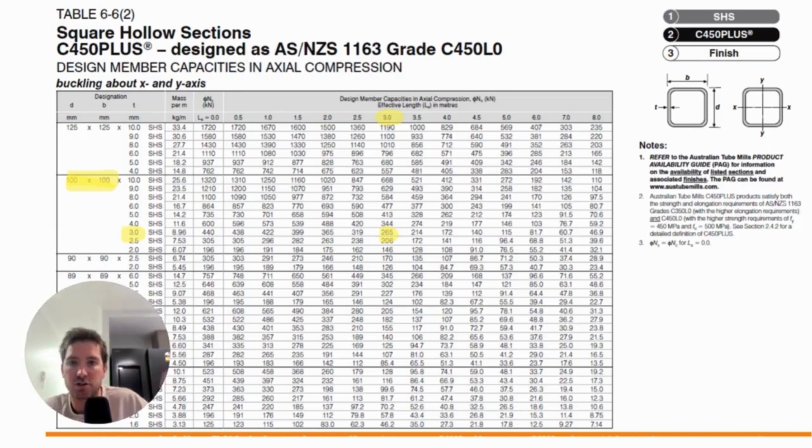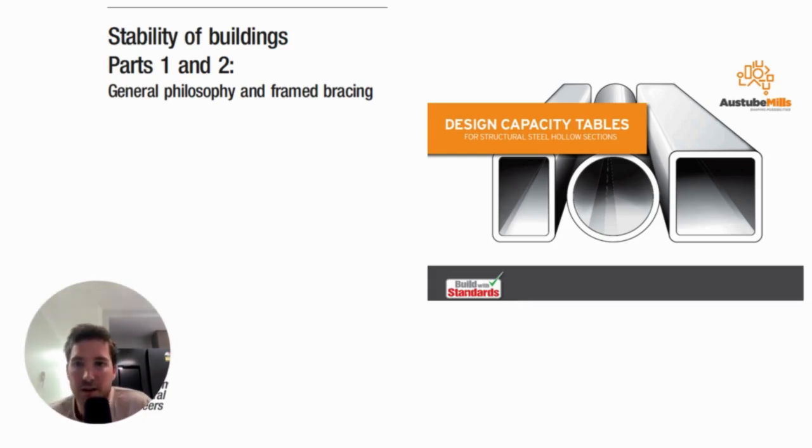What have we got here? It's a 100 by 3 SHS that I think I've chosen here to take the compression load. And I just use, in this instance I use the same member everywhere, which is why I can say this is fine. I've found the critical part of my braced structure and I know that it's okay here, so I know it's okay everywhere else.